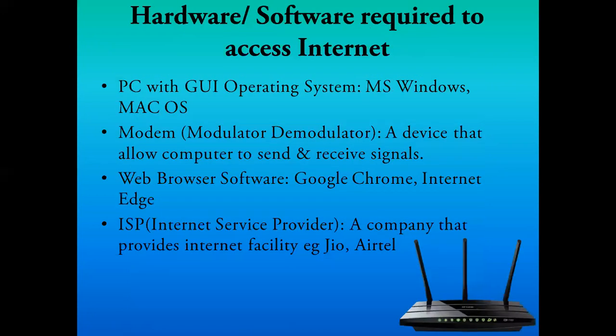To access the internet, you first require a PC, laptop, or mobile phone with a GUI operating system — that is, a Graphical User Interface operating system where you can find buttons and do clicks. On mobile we have Android, which is GUI, and on laptops and computers we have Windows or Mac OS, which are also GUI.